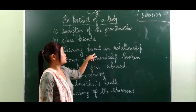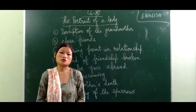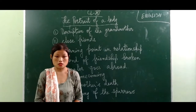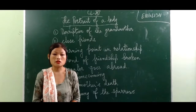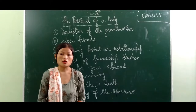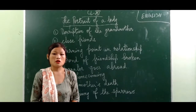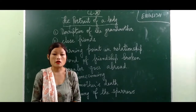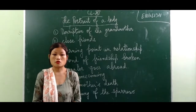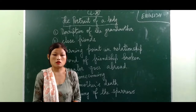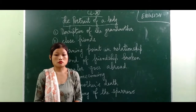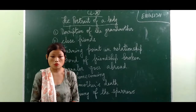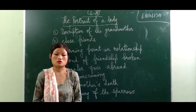Point three is the 'Turning Point in Their Relationship.' The turning point started when his parents sent for them in the city. They shifted from the village to the city, and city life completely changed their relationship. The grandmother started feeling very alone and didn't like the city life because she was unable to help her grandson with his studies, as he now had subjects like geography, science, and English which she didn't know.